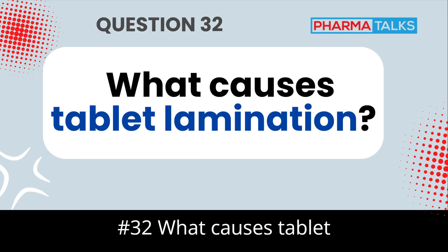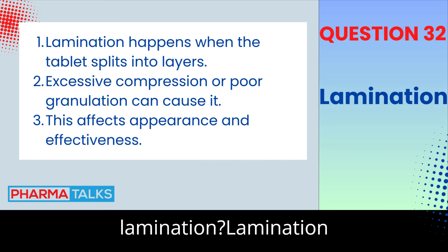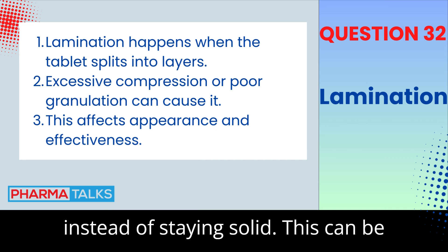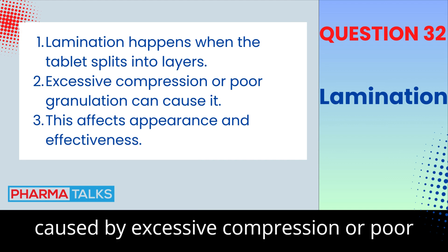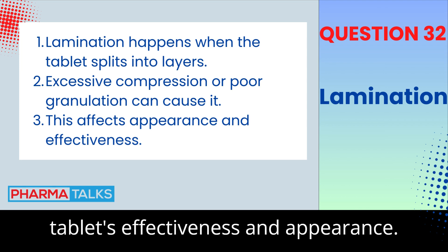Question 32: What causes tablet lamination? Lamination happens when a tablet splits into layers instead of staying solid. This can be caused by excessive compression or poor granulation, and negatively impacts the tablet's effectiveness and appearance.